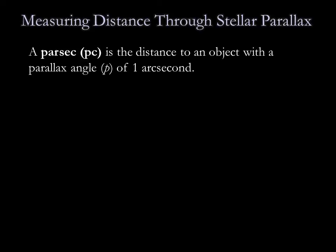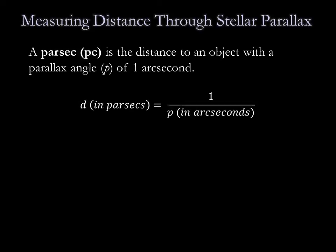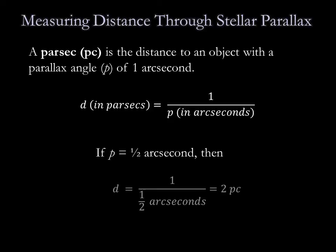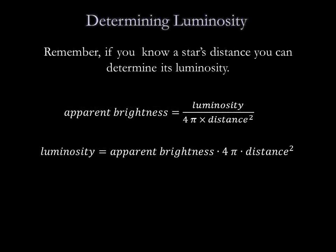If we use units of arc seconds for the parallax angle p, the distance in parsecs is simply one over the parallax angle. For example, for a star with a parallax angle of one half of an arc second, the distance is two parsecs. Remember, if you know a star's distance, you can determine its luminosity. For a star you have measured the parallax angle for, you can calculate the distance, and then you can measure the apparent brightness. You have everything you need to determine luminosity — the intrinsic brightness of the star.